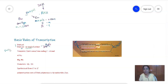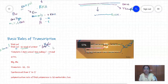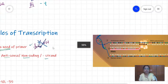RNA polymerase has the ability to add the first nucleotide by itself. The strand from which the new RNA strand is derived is called the template strand. The template strand is also called the antisense strand, non-coding strand, or minus strand.